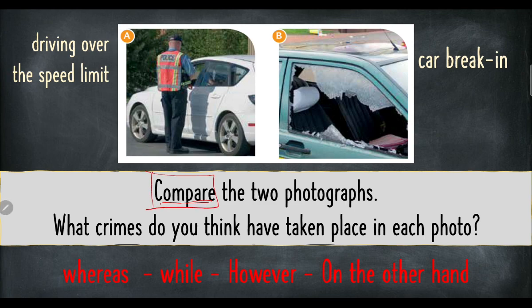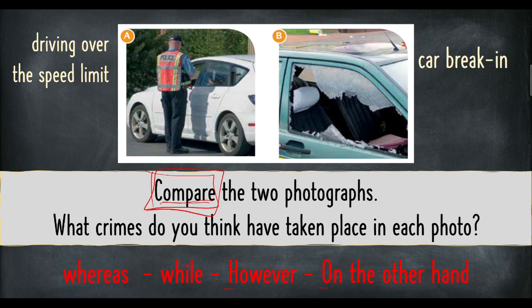When you compare, I would advise you to use these words: 'whereas,' 'while,' 'however,' 'on the other hand' — the meaning is the same, mana kalau. 'Whereas' and 'while' use a small letter, meaning they are used in the middle of a sentence: 'The first picture is a picture of something while the second picture is a picture of something else.' 'However' and 'on the other hand' use a capital letter — you combine two different sentences: sentence one, then 'however,' then sentence two.